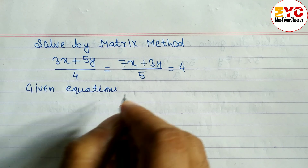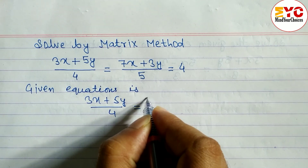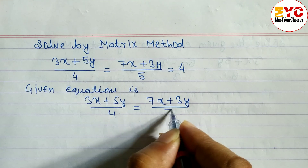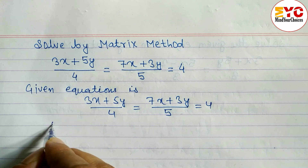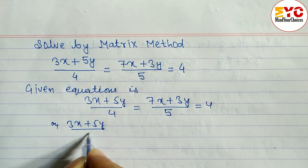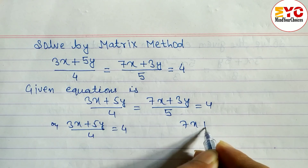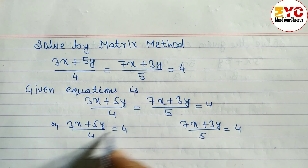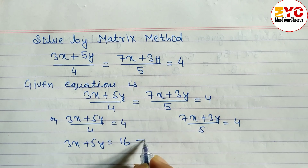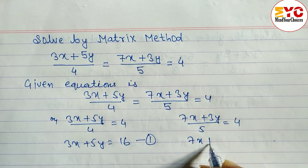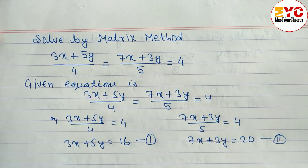The given equation is 3x + 5y/4 = 7x + 3y/5 = 4. Since the first and last parts are equal, we write 3x + 5y/4 = 4. Similarly, the second and last parts give 7x + 3y/5 = 4. Cross-multiplying, we get equation 1: 3x + 5y = 16, and equation 2: 7x + 3y = 20.